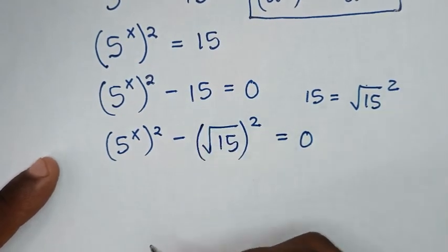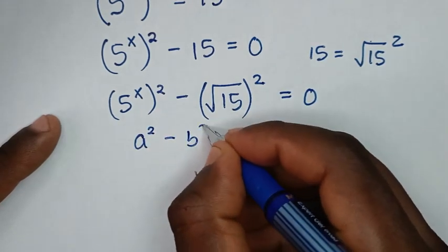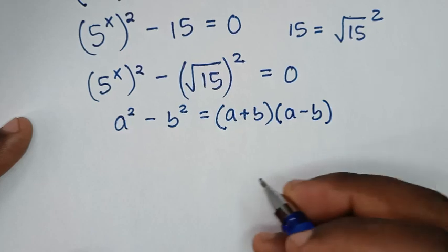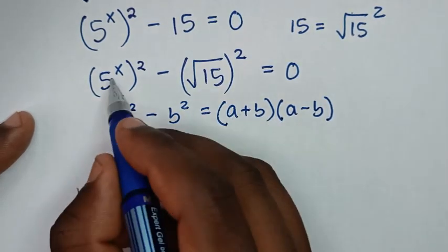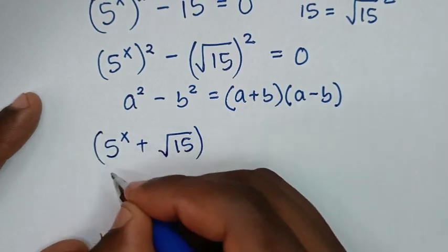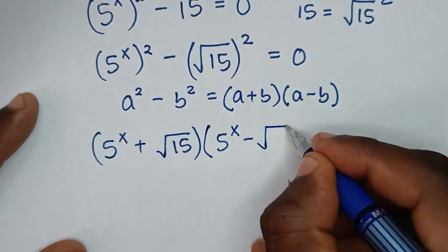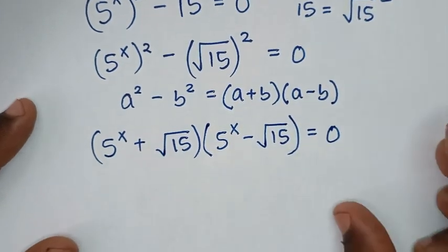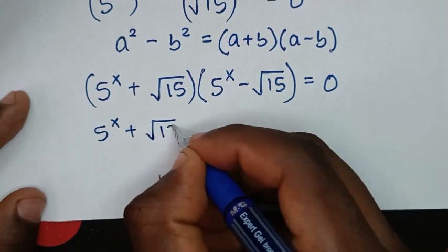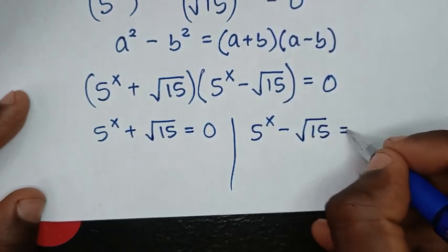This is now in the difference of two squares form. We apply the rule: a squared minus b squared equals (a plus b)(a minus b). So it becomes (5 power of x plus square root of 15) times (5 power of x minus square root of 15) equals 0. This gives two solutions: 5 power of x plus square root of 15 equals 0, and 5 power of x minus square root of 15 equals 0.